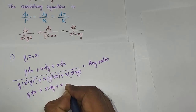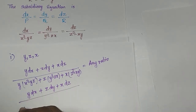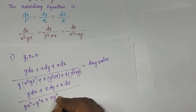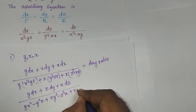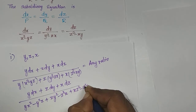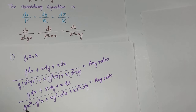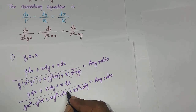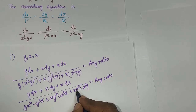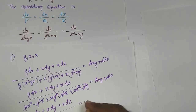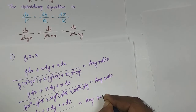Expanding the denominator: y·x² - y²z + z·y² - z²x + x·z² - x²y. We get: yx² - yx² cancels, -y²z + y²z cancels, -z²x + xz² cancels — the entire denominator equals 0. So y·dx + z·dy + x·dz divided by 0 equals any ratio.